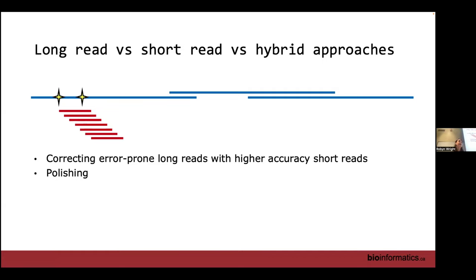PacBio HiFi is a bit different because it sequences each molecule many times, allowing errors to cancel out or be corrected. Recent results show that HiFi reads can produce near-complete assemblies on their own. For a while, hybrid approaches combining short and long reads were standard to maximize cost efficiency, but with improvements in HiFi accuracy, long-read-only assembly is increasingly viable.